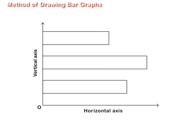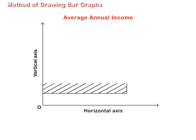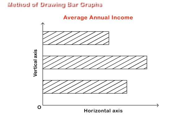Step 4. Give a heading to the bar graph. Step 5. Shade or color or hatch the bars. Step 6. Keep the width of all bars uniform. Step 7. Keep uniform distance between the bars throughout.